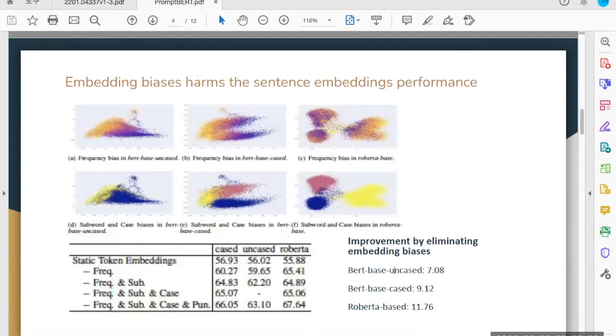This visualization shows the token embeddings with different biases. For frequency bias, the darker the color the higher the token frequency. For subword and case bias, yellow represents subword and red represents tokens containing capital letters. What this visualization demonstrates is that the three pre-trained models are highly biased by token frequency, subwords, and case. Those embedding biases harm the sentence embedding performance.